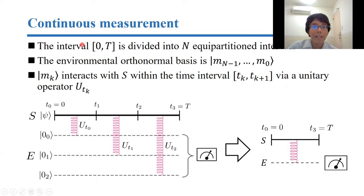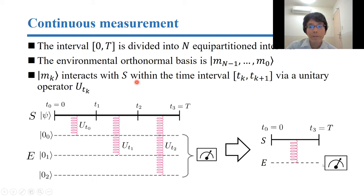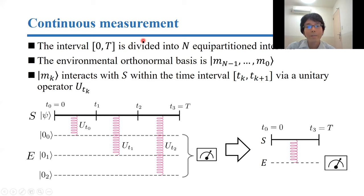This kind of quantum trajectory can be cast to the simple open quantum system model, so my results can be applied to continuous measurements. To change the continuous measurement to this simple model, we divide the interval into N equal partitions. During each time interval, the principal system interacts with a subspace of the environment. If we take N to infinity, the continuous measurement is recovered.